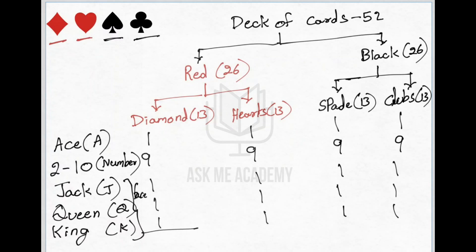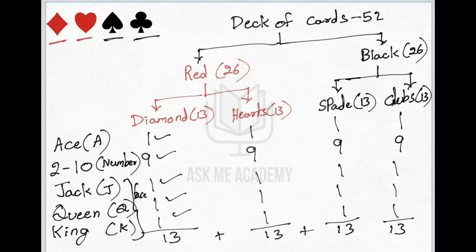If you add all the cards: 1 ace plus 9 numbered cards plus 3 face cards equals 13 in each shape. Adding all shapes: 13 plus 13 plus 13 plus 13 makes 52, which confirms a full deck of cards has 52 cards. Just make this chart so that it is easy for you to remember.